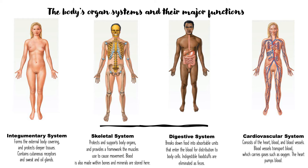The digestive system's main job is to break down food into substances the body can use. Your body cannot absorb pasta, bread, or rice, but it can absorb glucose, amino acids, and lipids. Anything not digestible is eliminated as feces. The cardiovascular system consists of the heart, blood, and blood vessels. Blood vessels transfer blood carrying gases like oxygen, and the heart pumps the blood.